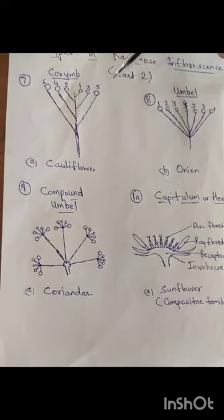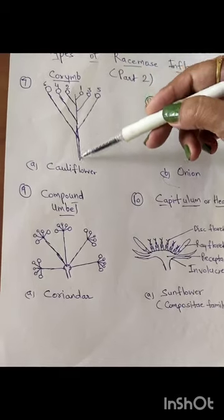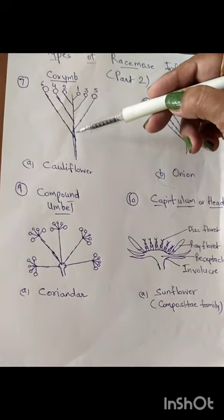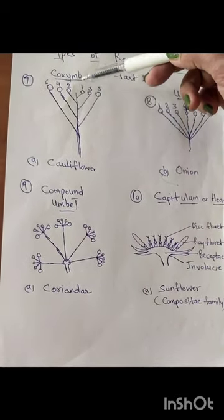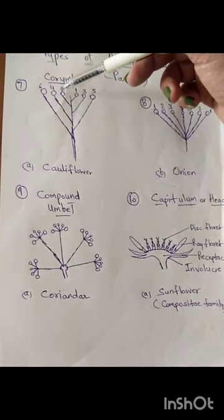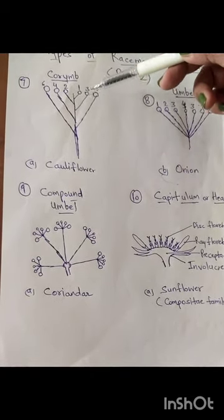The first is the corymb. What is the main axis of the corymb? The first and second flower grows. The pedicels are different lengths.